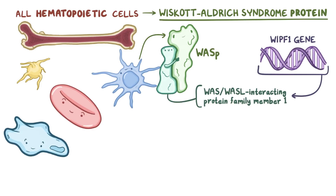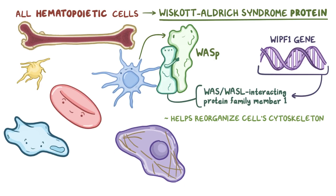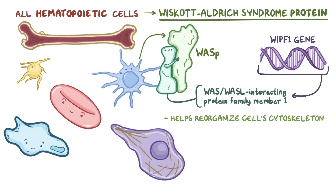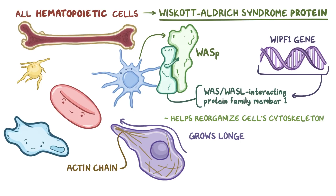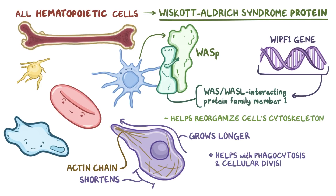WASP, aside from having a really long name that shortens down to the name of a scary flying insect, helps to reorganize the cell's cytoskeleton, and therefore its overall shape. The cytoskeleton can change by either adding to or removing actin proteins from the end of an actin chain. The chain grows longer in the direction that a cell wants to move and shortens on the side that a cell wants to move away from. This helps with various cellular activities like phagocytosis and cellular division.